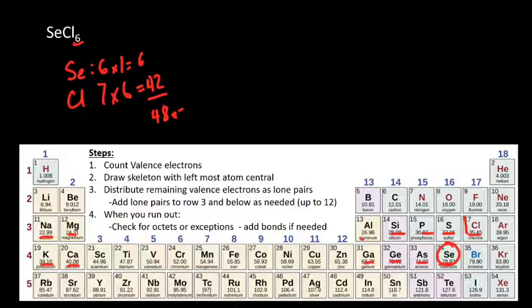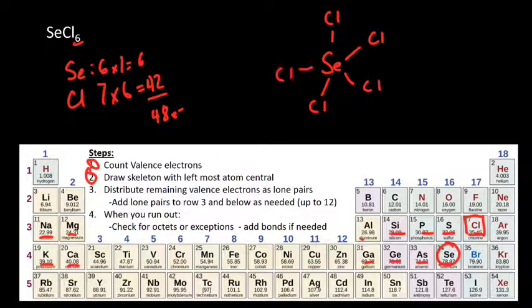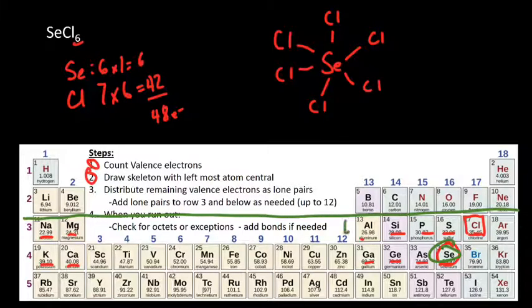Now, which one's central? Well, selenium is more to the left than chlorine. Another way you can tell is there's six chlorines - a ton of chlorines on one selenium. So that means selenium is going to be central. Now we're going to draw our skeletal structure. It feels weird to add so many chlorines, but that's what we do. Because there's six chlorines, we add them. And why is that okay? Well, selenium is below row three. So anything below row three - silicon, germanium, iodine - those can all break the octet rule. And so it's okay to have six bonds on it.